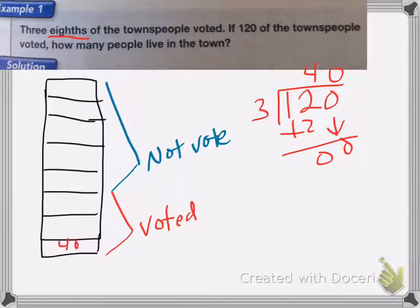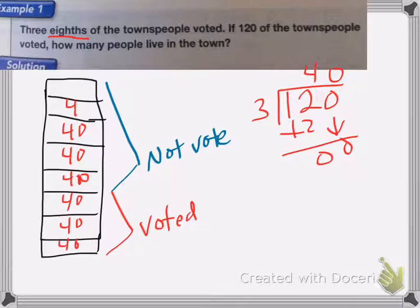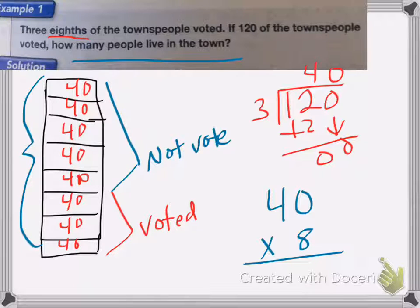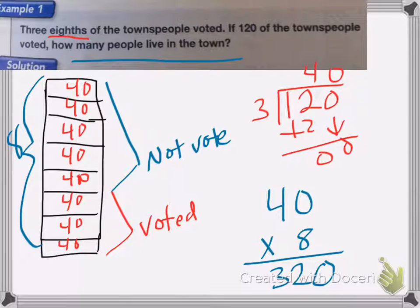That gives us 40, so we put 40 people in each of the eight slots. Now to find the total number of people in town, I take 40 and multiply it by eight because there are eight sections total. Eight times zero is zero, eight times four is 32, giving us 320 people total in the town.